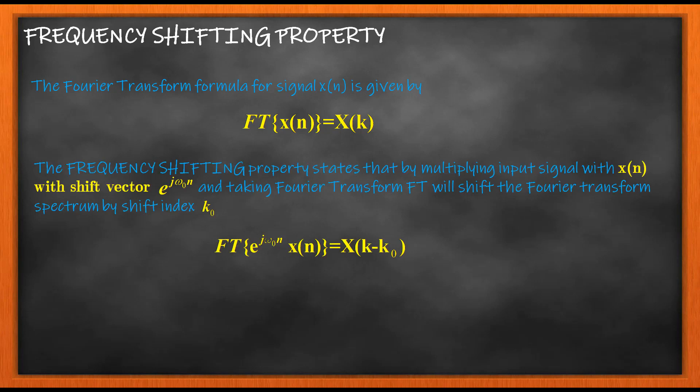So what does frequency shifting do? The frequency shifting takes the Fourier transform and shifts it along the frequency axis. So you have the Fourier transform of your signal x of n, which is equal to x of k.